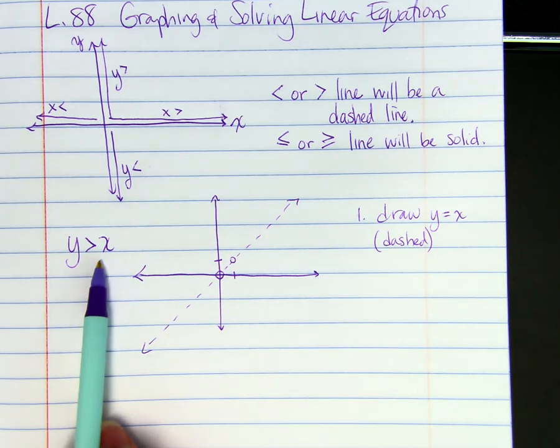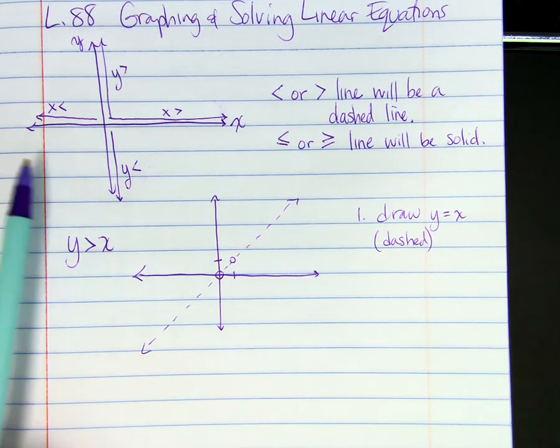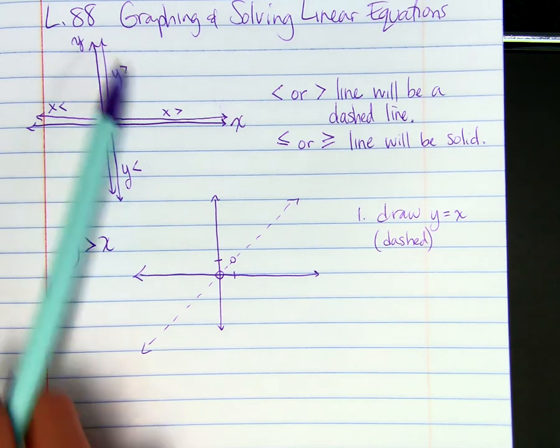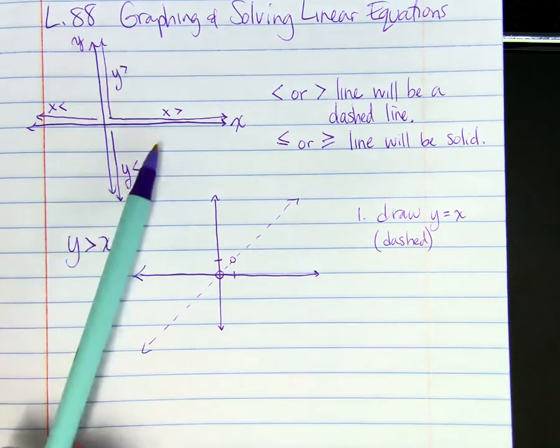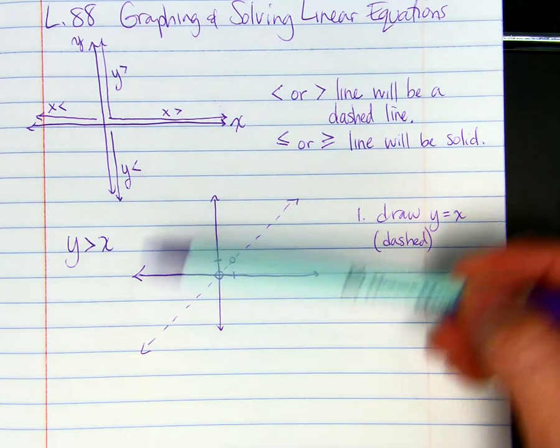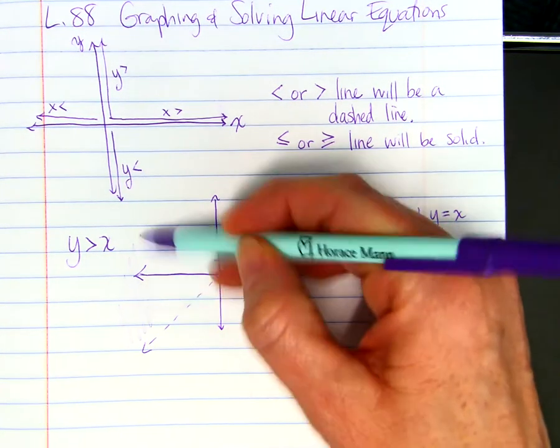So it's Y is greater than. So if you look up off our diagram here, it says that we need to graph above, we need to go up above the line when Y is greater than. So here's our line. We're going to graph above it. And there's our graph.